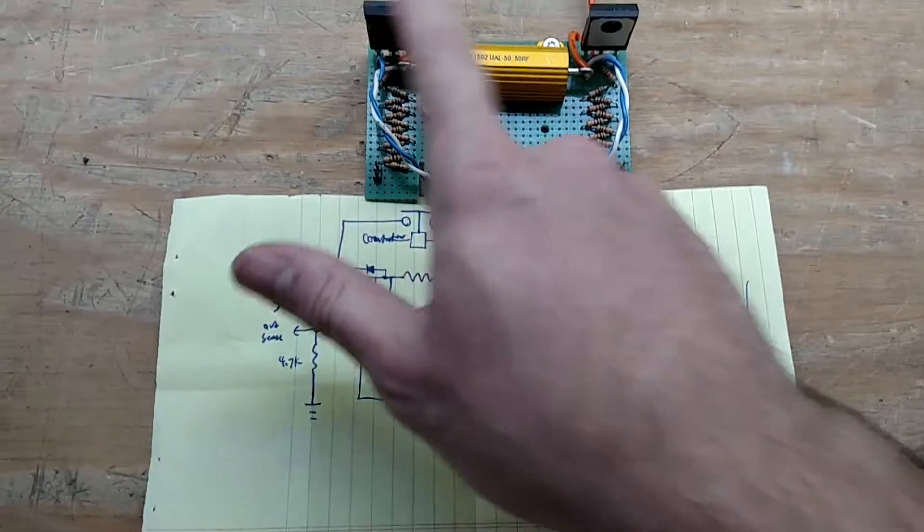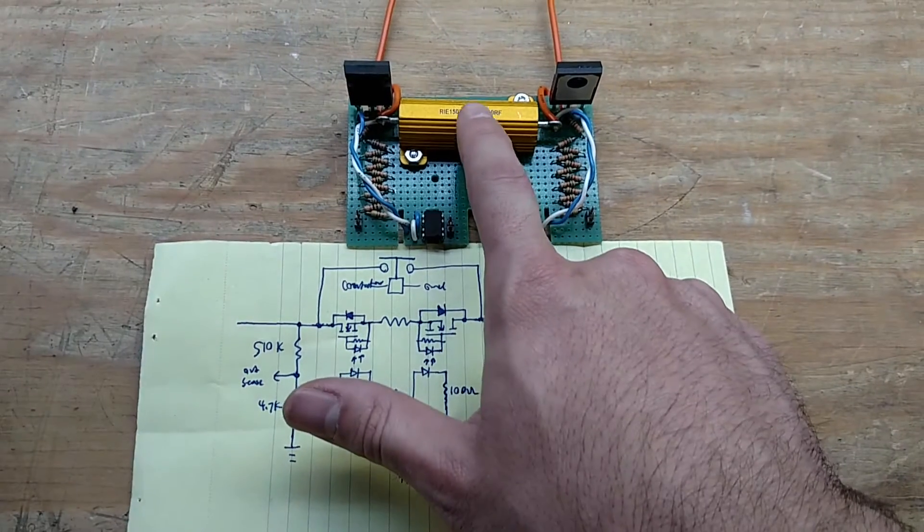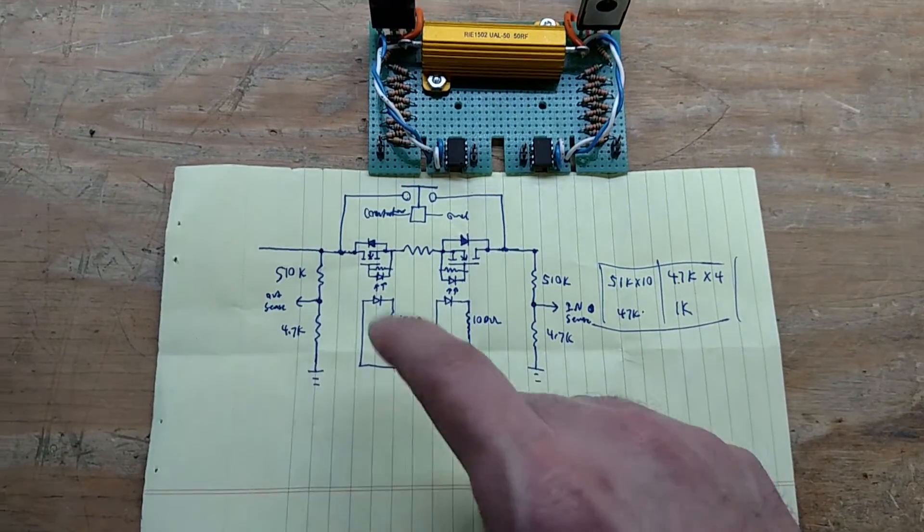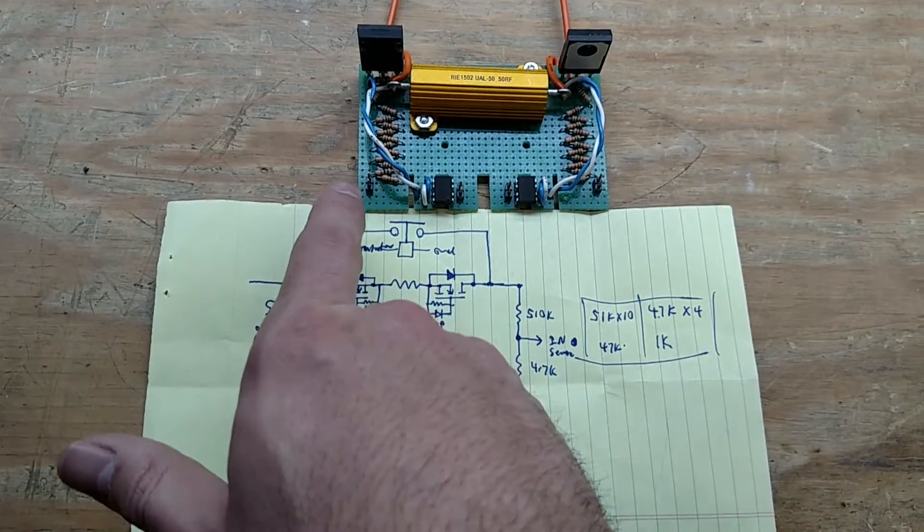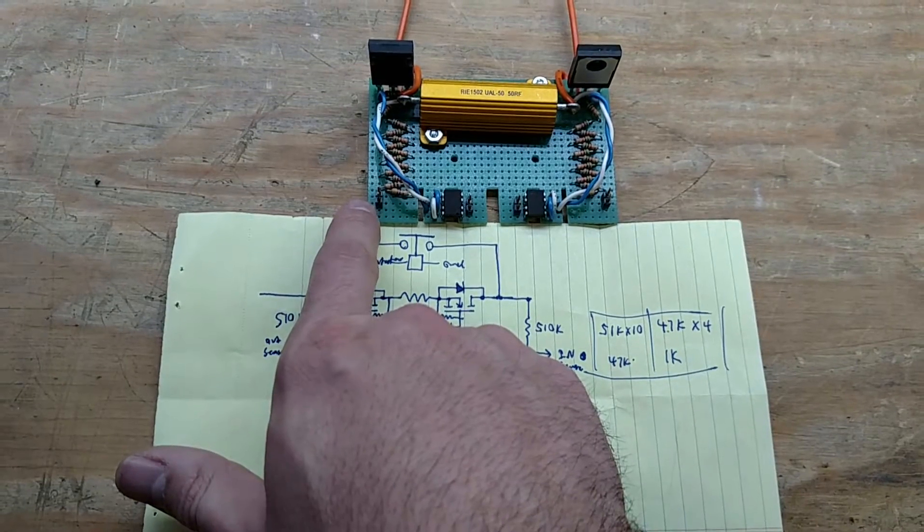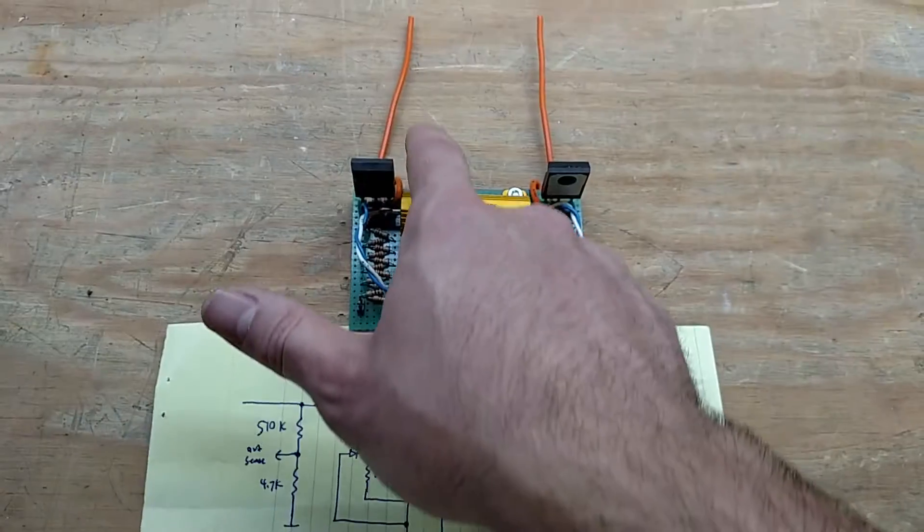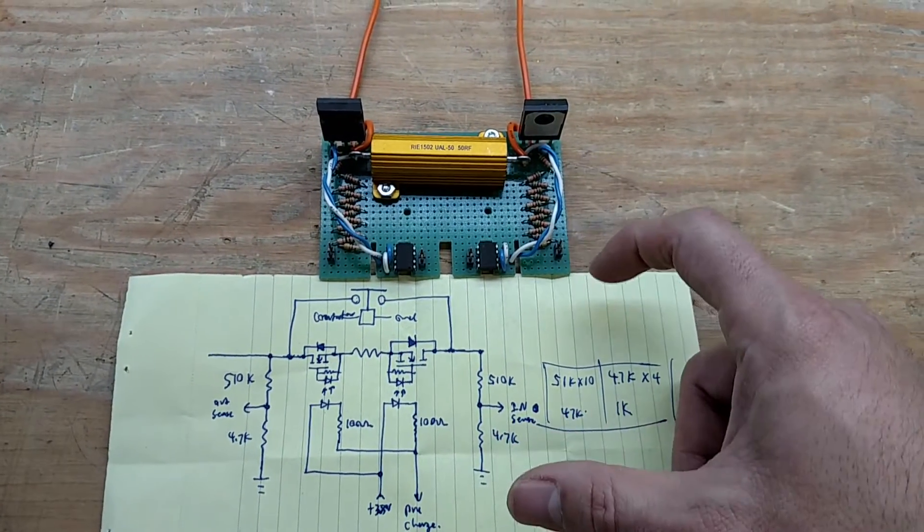So of course these are the big MOSFETs up here. This resistor here is 50 ohms, it's this big guy, a 50 watt resistor. This voltage sense on this side you can see is this big resistor chain here. Coming off of this connector will be 5 volts and ground when we've got 550 volts coming in on this wire to ground. Same on this side, it's the exact same circuit.